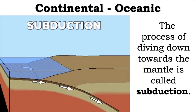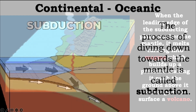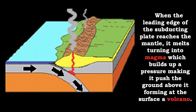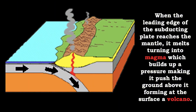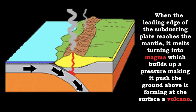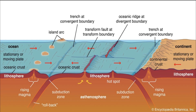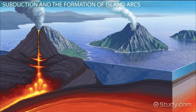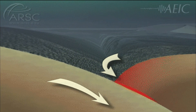As a continental plate converges with an oceanic plate, the oceanic plate dives under the continental plate. The process of diving towards the mantle is called subduction. When the leading edge of the subducting plate reaches the mantle, it melts, turning into magma, which builds up pressure, making it push the ground above it, forming a volcano at the surface. At the oceanic plate, a depression called a trench is formed along the boundary. Parallel to it is a series of volcanoes called a Volcanic Island Arc. The ground may shake, causing an earthquake. This shaking may disturb the water surface, making the water flip upwards — this event is called a tsunami.